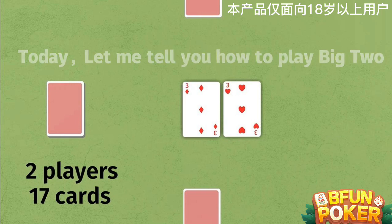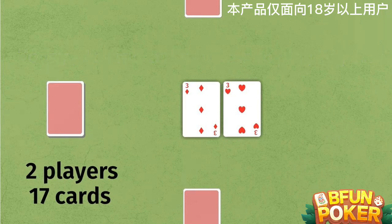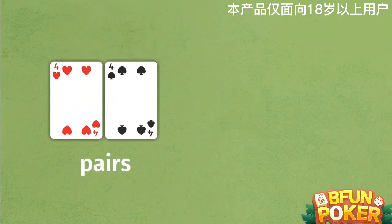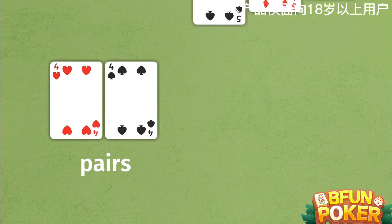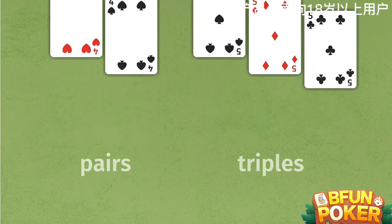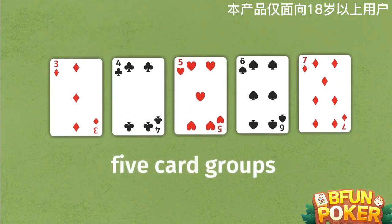Today, let me tell you how to play Big 2. There are three types of combinations in Big 2: pairs, two cards of the same rank; triples, three cards of the same rank; and five card groups.